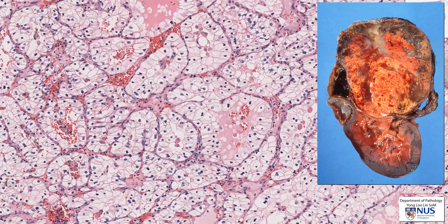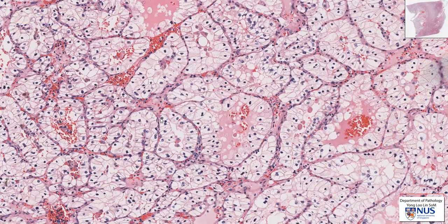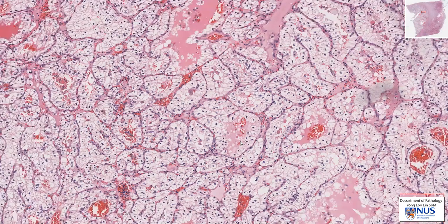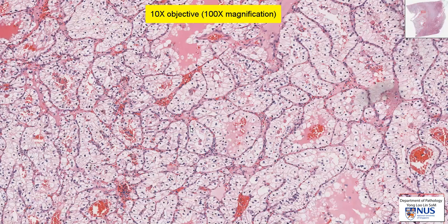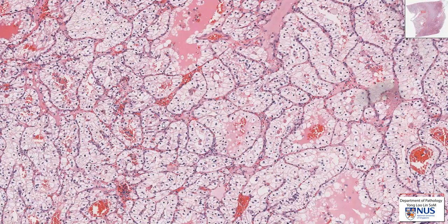Looking at the nuclei, you can see that at this magnification they're not markedly pleomorphic. We usually assess it at roughly 10 times objective view, or 100 times magnification. What I'm going to do is to hunt for nucleoli. If you look at this nucleus, you can just about make out the nucleolus, similarly over here, but it is not prominent at this magnification.